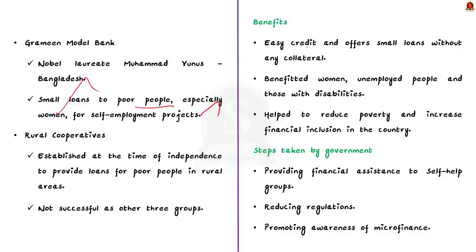Regarding the benefits of microfinancing: microfinance provides easy credit and offers loans without any collateral, hence benefiting underfinanced sections of the population like women, unemployed people, and those with disabilities. Microfinance has helped reduce poverty and increase financial inclusion in the country. However, it has also faced challenges like high interest rates and loan defaults. The Government of India is committed to promoting microfinance and has taken steps including providing financial assistance to self-help groups, reducing regulations, and promoting awareness of microfinance. As a result, microfinance is expected to continue to grow in India and reach more people in need.